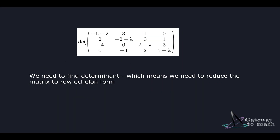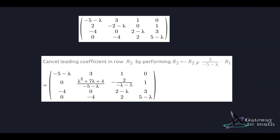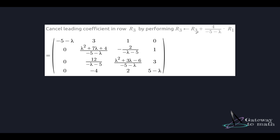Now we find the determinant by reducing the matrix to row echelon form. The first operation is on R2: R2 minus (2 / (minus 5 minus lambda)) times R1. The updated R2 equals: 0, (lambda squared plus 7 lambda plus 4) / (minus 5 minus lambda), (minus 2) / (minus lambda minus 5), 1. The next operation is on R3: R3 plus (minus 4 / (minus 5 minus lambda)) times R1, giving R3 as: 0, 12, (12 / (minus lambda minus 5)), (lambda squared plus 3 lambda minus 6) / (minus 5 minus lambda), 3.